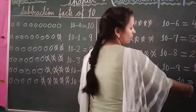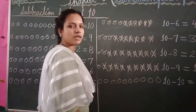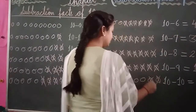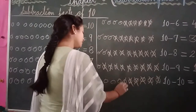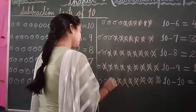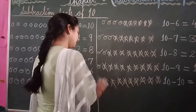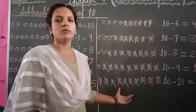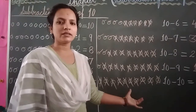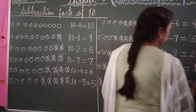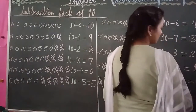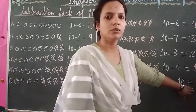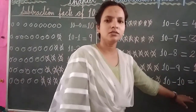Again draw your 10 balls. Write: 10 minus 10 equal to. Cross out all 10 balls: 1, 2, 3, 4, 5, 6, 7, 8, 9 and 10. How many balls are left? 0 — it means nothing. 10 minus 10 equal to 0. The answer is 0.